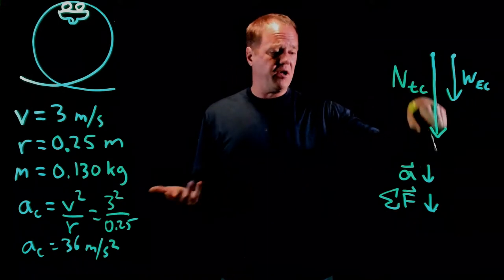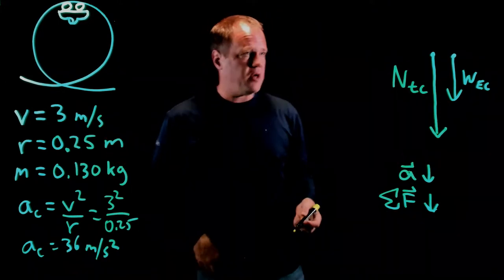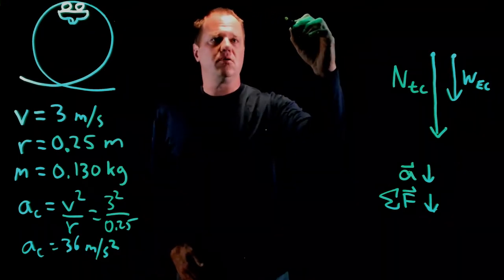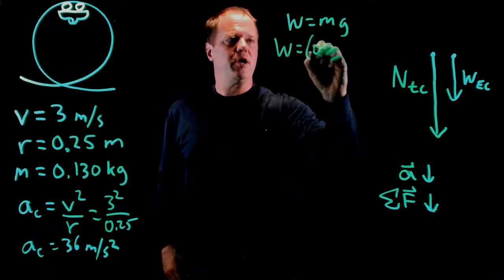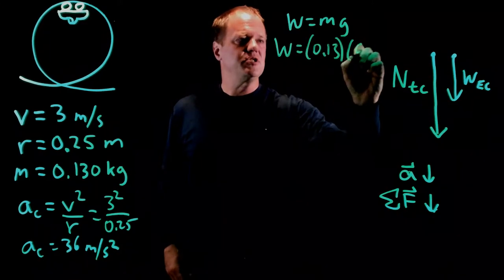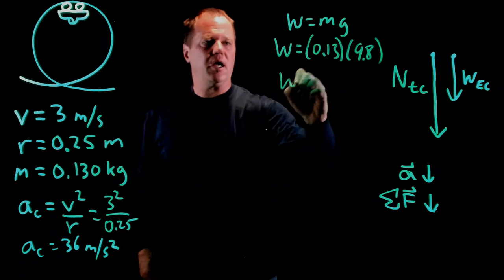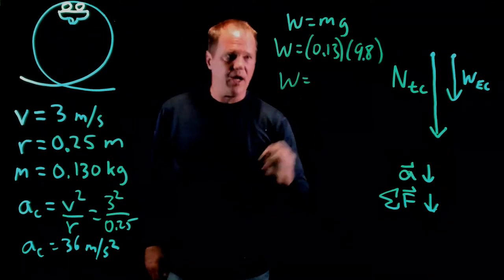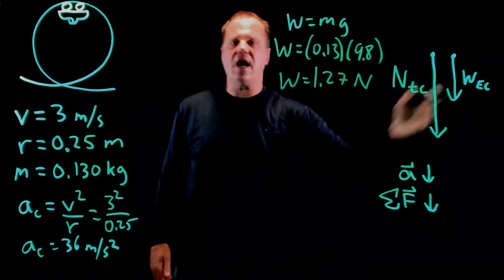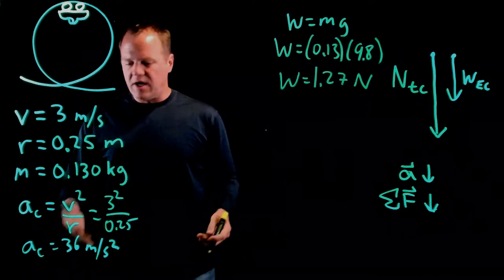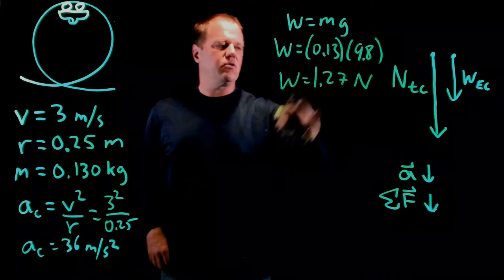So I've got the acceleration, which is down towards the center of that circle. Now I just need to calculate these forces. The weight force is easy. I just do W equals mg, so W is 0.13 times 9.8, and I throw that into my calculator, and it tells me that it's 1.27 newtons down. So I'm two-thirds of the way there. I've got the acceleration. I've got the weight, which I calculated directly.